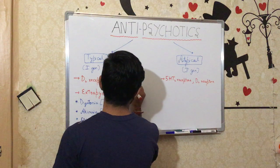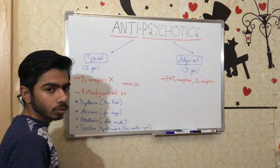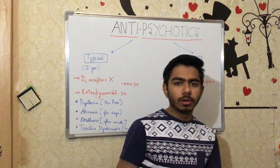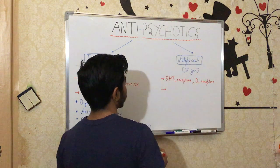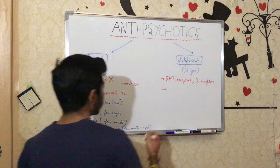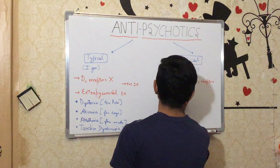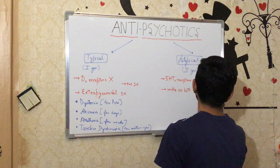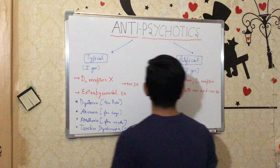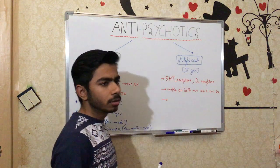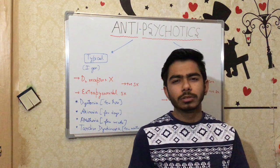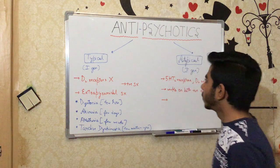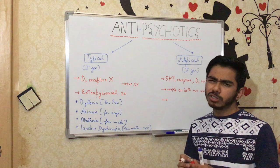As already mentioned, typical antipsychotics work mostly on the positive symptoms of schizophrenia. As far as atypical antipsychotics are concerned, they work on both positive and negative symptoms of psychosis or schizophrenia — that's why they are more efficient compared to typical ones. Since atypical drugs bind more to serotonin receptors and only transiently bind to D2 dopamine receptors, they won't have as many extrapyramidal effects. This is also the reason that atypical drugs are safer than typical ones — they don't have extrapyramidal symptoms.